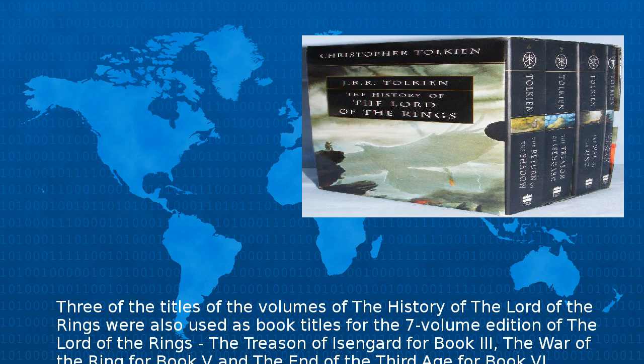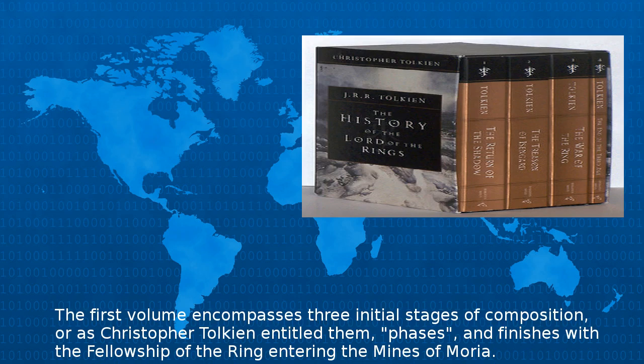Three of the titles of the volumes of The History of the Lord of the Rings were also used as book titles for the seven-volume edition of The Lord of the Rings: The Treason of Isengard for Book III, The War of the Ring for Book V, and The End of the Third Age for Book VI.